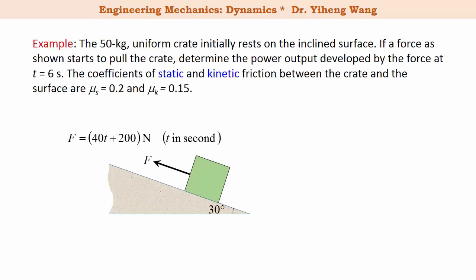Let's look at this example. We have a 50 kilogram uniform crate initially resting on this inclined surface. The coefficients of both static and kinetic friction between the crate and the surface are given. Then there's a force that starts to pull this crate. The force is a function of time, and we need to determine the power output developed by the force at t equals 6 seconds.